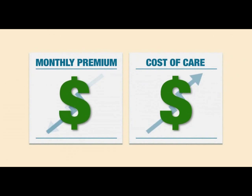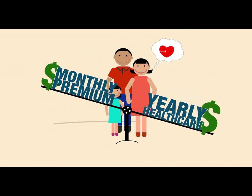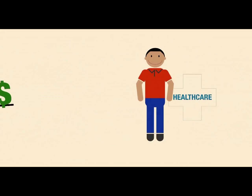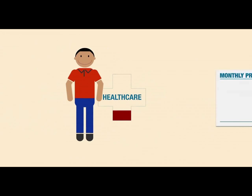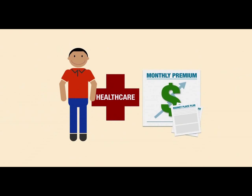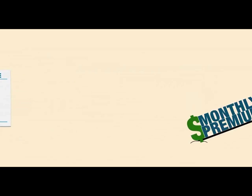Finding a good health plan means balancing how much you pay each month with how much health care you think you and your family will need during the year. If you're healthy and don't go to the doctor very often, a plan with a low monthly premium will probably cost you the least. But if you need to go to the doctor a lot or need expensive prescriptions, look at plans with lower out-of-pocket costs — spending more on monthly premiums can save you money in the long run.